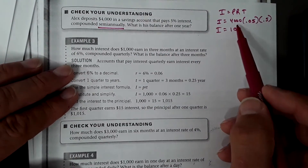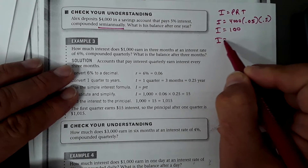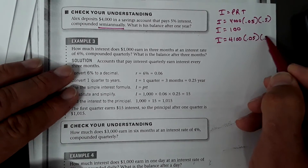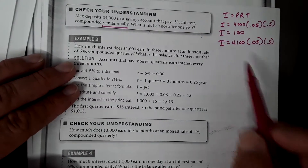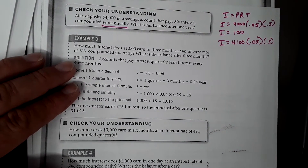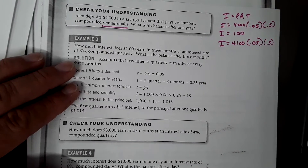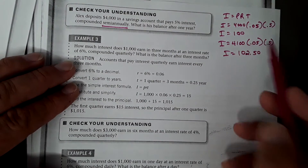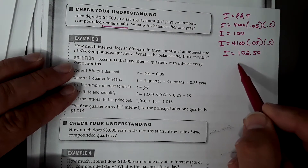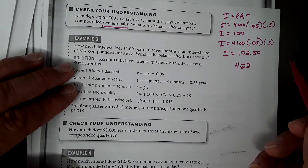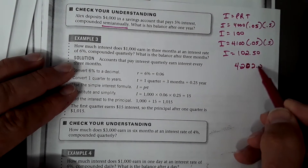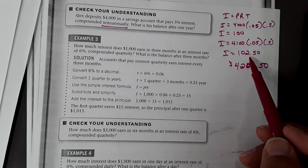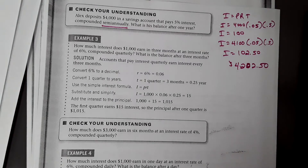For the second half of the year, Alex now has $4,100 — the $4,000 plus the $100 earned in interest. Multiplying $4,100 by 5% by half a year gives $102.50 for the second six months. Adding that back to $4,100 gives a final balance of $4,202.50. So he earned $100 for the first six months and $102.50 for the second.